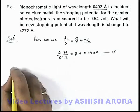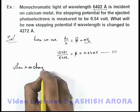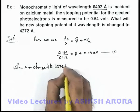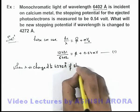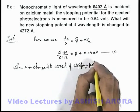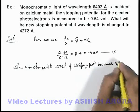And in another situation we can write when lambda is changed to 4272 angstrom, if stopping potential becomes V₀ prime.